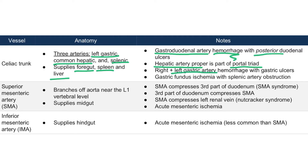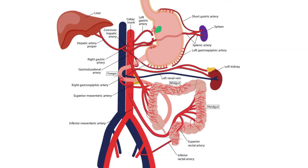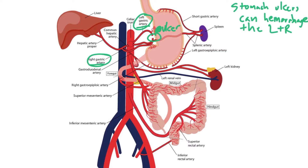We also need to discuss the right gastric artery and how both the right and left gastric arteries can hemorrhage with gastric ulcers. Gastric ulcers are not as common as duodenal ulcers. When they do occur, they form on the lesser curvature of the stomach. The left gastric artery and the right gastric artery — a branch of the common hepatic artery — both form an anastomosis to supply blood to the entire lesser curvature. If there is an ulcer on the lesser curvature and it perforates, hemorrhage to one or both — the left or right gastric artery — can occur.